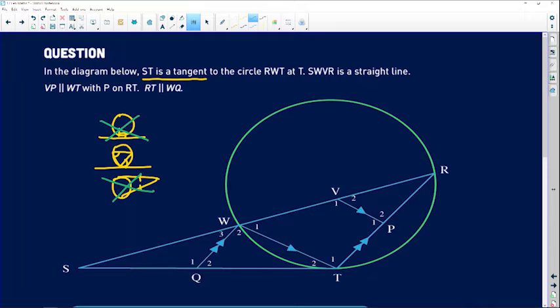Please keep that in mind. So we see that ST is a tangent to the circle at RWT at T. SWVR is a straight line, very important. Then VP is parallel to WT. We can see that if you allow me to highlight, we see that this is parallel to that line there. In addition, we're also told that RT is parallel to the other line, so this one here is parallel to WQ. Very important information that will allow us to figure out a couple of things in this diagram.